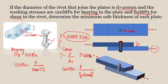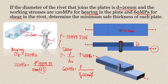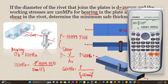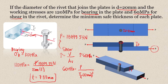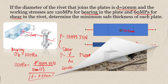Since we already have P, we can substitute it into the bearing equation: 120 = 18,849.55 / (20 × t). Solving for thickness t gives 7.85 mm. This will be the minimum safe thickness of our plate.